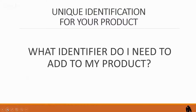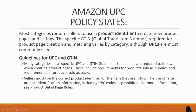So what identifier do I need to add to my products? That's a very common question. This is what Amazon's policy says about UPCs: most categories require sellers to use a product identifier to create new product pages and listings. The specific GTIN, or global trade item number, required for product page creation and matching varies by category, although UPCs are the most commonly used. Many categories have specific UPC and GTIN guidelines that sellers are required to follow, including requirements for products sold as bundles and packs.